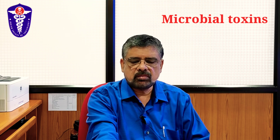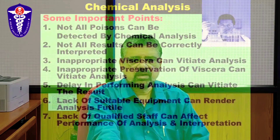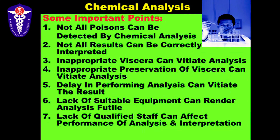We will close this session with some important points about chemical analysis, because there are many misconceptions. Number one: not all poisons can be detected by chemical analysis — it is not a magic wand. Chemical analysis sometimes fails, and even if you get a result it may be difficult to interpret correctly. Interpretation is not always easy.